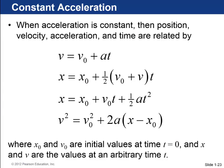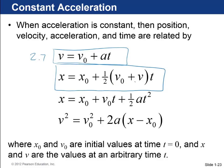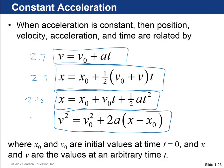When acceleration is constant, position, velocity, and acceleration are related by four equations. Equation 2.7: final velocity equals initial velocity plus a times t. Equation 2.9: displacement equals the average of initial and final velocity times t — a useful equation. Equation 2.10: displacement equals v-zero times t plus one-half a t squared — gives distance traveled in terms of time without referencing final velocity. Equation 2.11: final velocity squared equals initial velocity squared plus 2a times the change in position — no time variable.